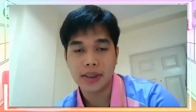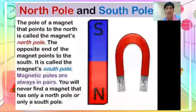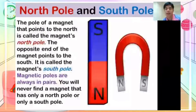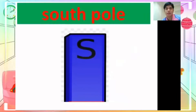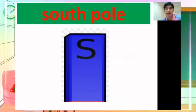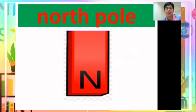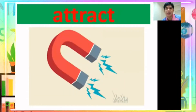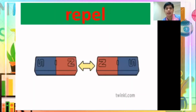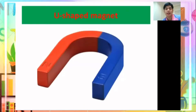Okay, vocabulary words. North pole — N, O, R, T, H, P, O, L, E — north pole. And south pole — S, O, U, T, H, P, O, L, E — south pole. Attract — A, T, T, R, A, C, T. Repel — R, E, P, E, L.